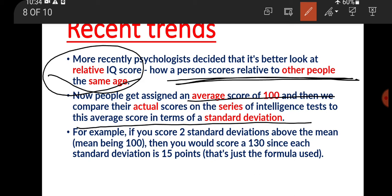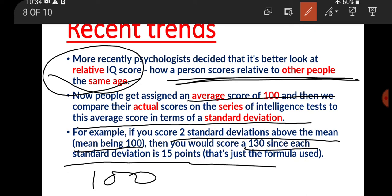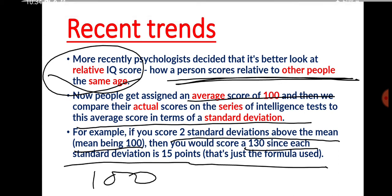We look at how much a score deviates from the standard. For example, if you score two standard deviations above the mean of 100, and the standard deviation is 15 points, you would score 130. So IQ equals Mental Age divided by Chronological Age, multiplied by 100.